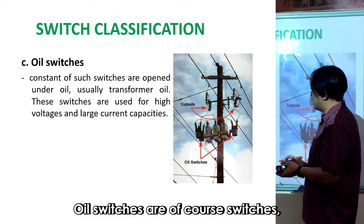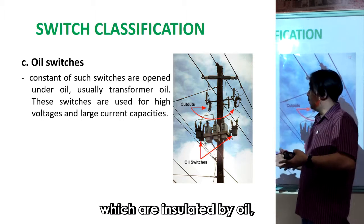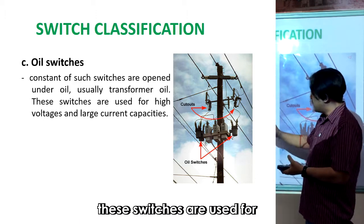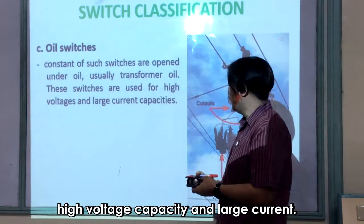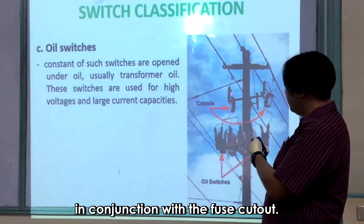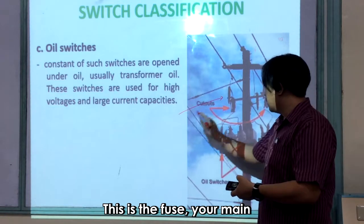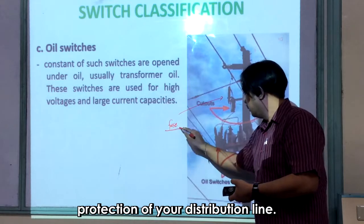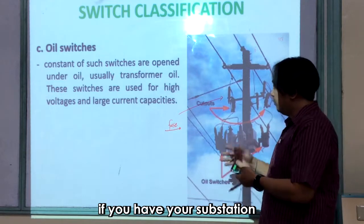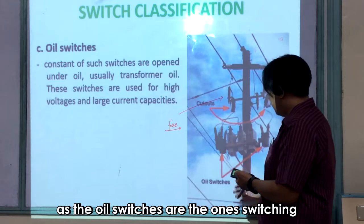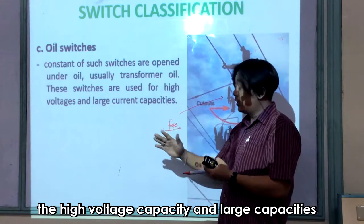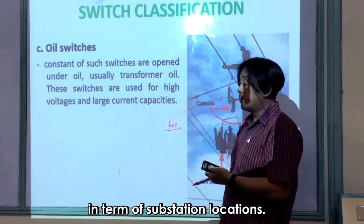Oil switches are switches insulated by oil — usually transformer oil, iron oil, or polymine. These switches are used for high voltage capacity and large currents. As you can see from the figure, the oil switches are in conjunction with the fuse cutout, which is the main protection of your distribution line. Oil switches handle switching of high voltage capacity in substation locations.